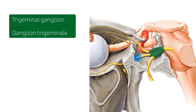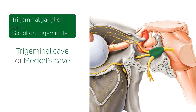This cavity is known as the trigeminal cave, or Meckel's cave. The trigeminal ganglion is a sensory ganglion that contains the afferent cell bodies of the three branches of the trigeminal nerve.